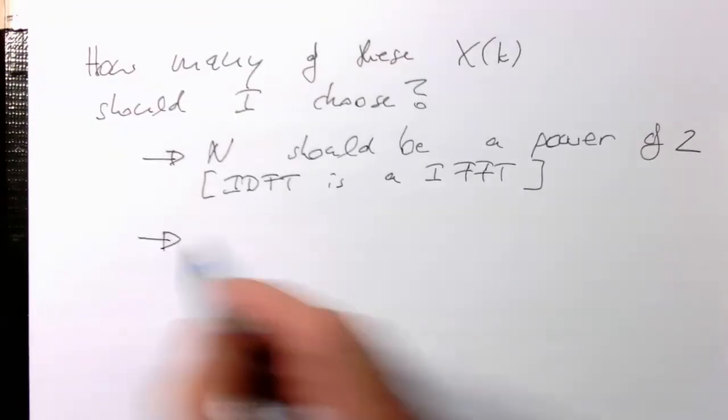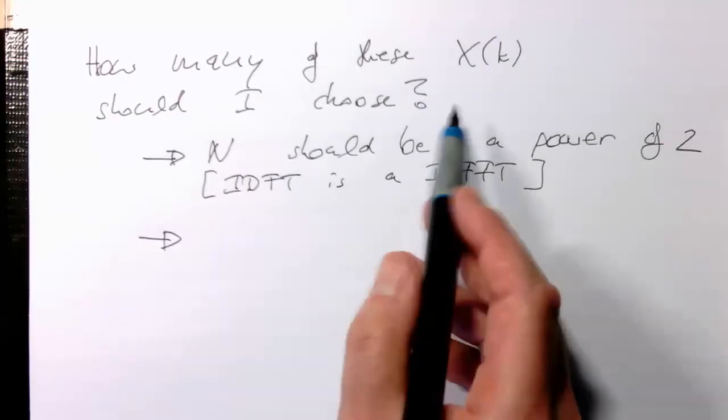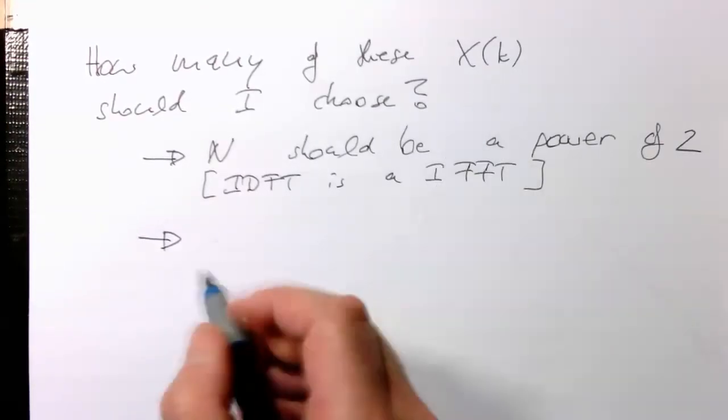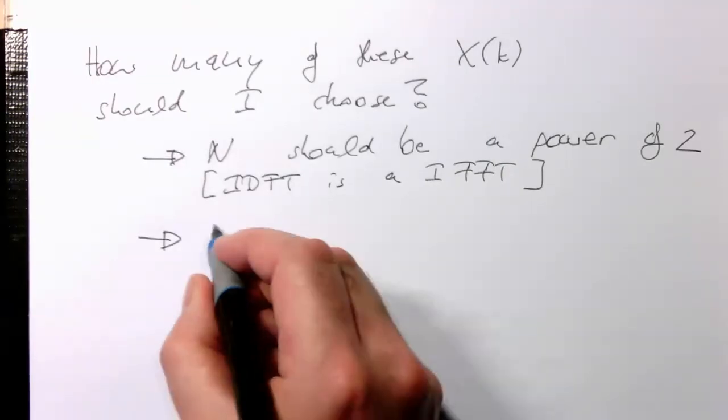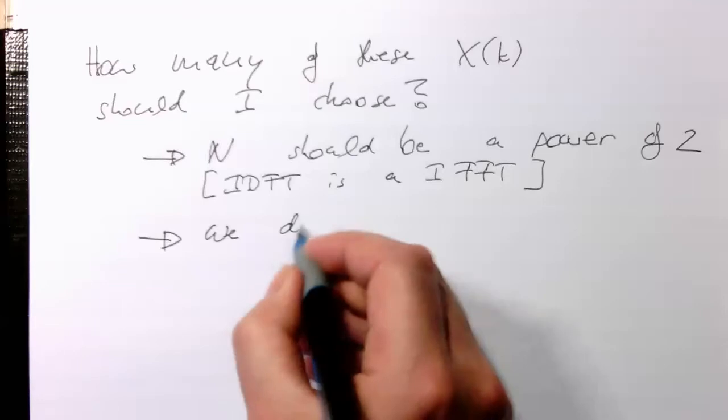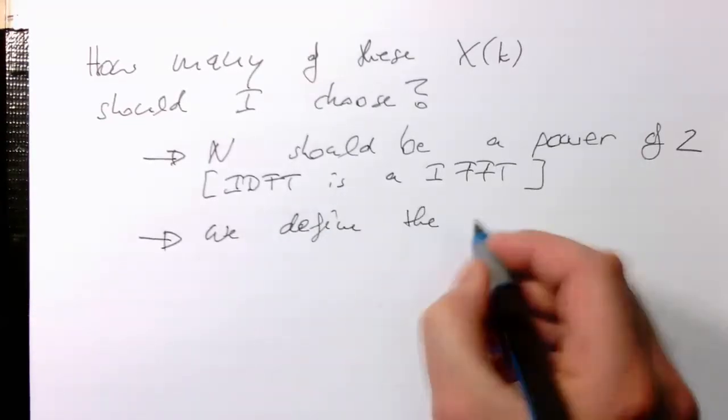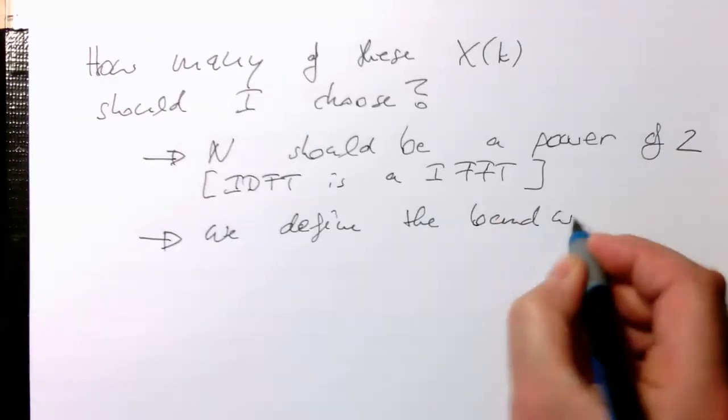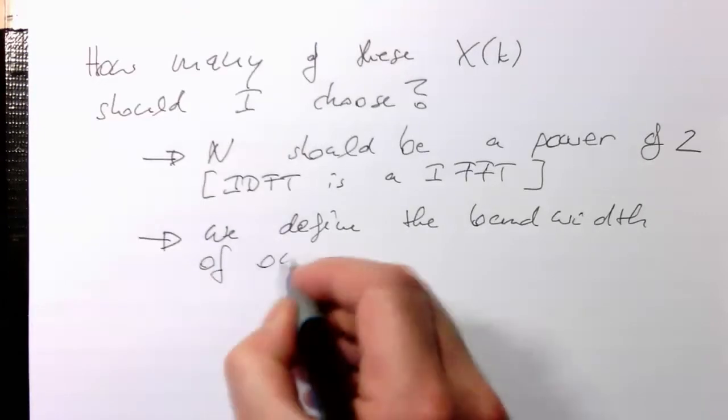And then the other thing is that we just choose the number of X(k) we're transmitting information to set the bandwidth of our baseband with that. So we define the bandwidth of our baseband.